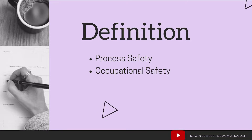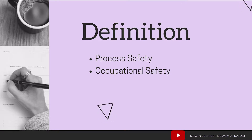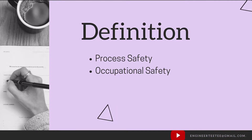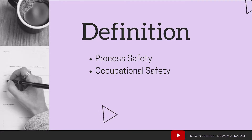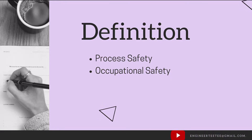Process safety efforts help to reduce the frequency and consequences of potential incidents. When we talk about incidents, we can talk about toxic or flammable material releases that result in toxic effects, fires, or explosions. The impact of these incidents could include harm to people — injuries or fatalities — harm to the environment, damage to properties, production losses, and adverse business publicity.